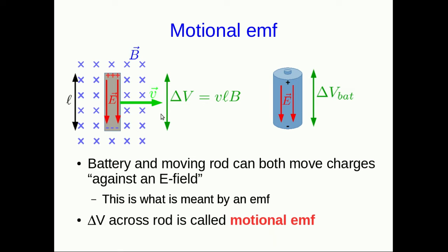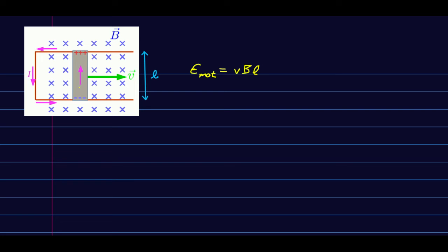We've been using this term EMF for a battery without maybe really knowing what it means. An EMF is any situation where you have forces or some other process that are moving charges up in potential, or in other words, against an E field. So as a result, we call this delta V across the rod a motional EMF because it is an EMF that results from the motion through a magnetic field. We just had the rod moving through the magnetic field. There was no current. Everything was in equilibrium. But if you now let it slide along wires, you've got a closed path, and current can flow around it.